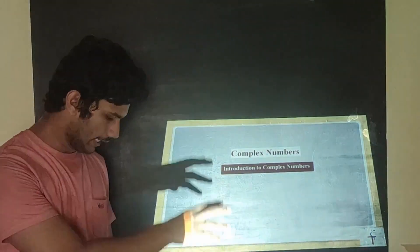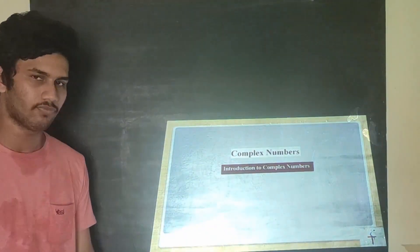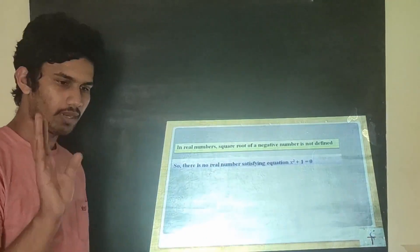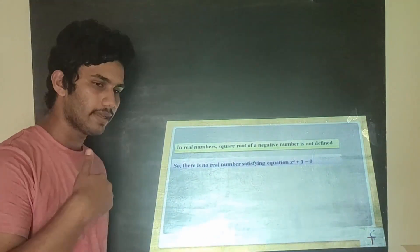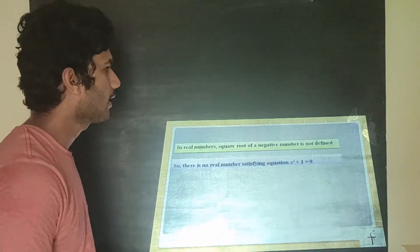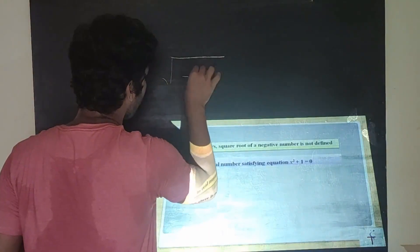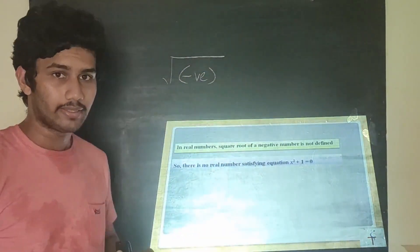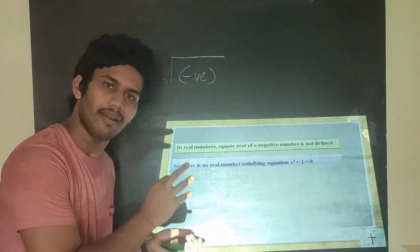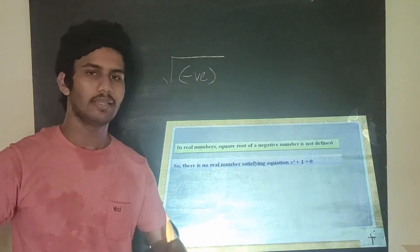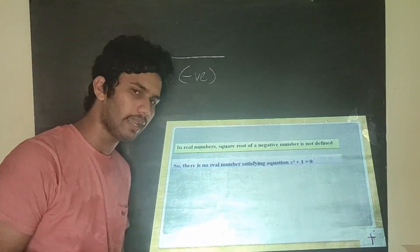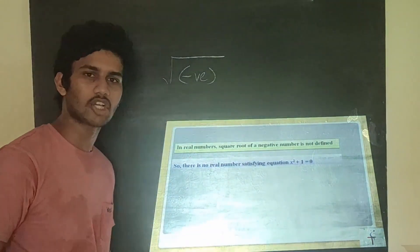Let's have an introduction to complex numbers first. Until 10th grade you have been learning that only a positive number has a square root — that means the square root of a negative number is not defined. But in 11th grade you will be facing some square roots of negative numbers. For that, mathematicians have discovered another beautiful number system: complex numbers.